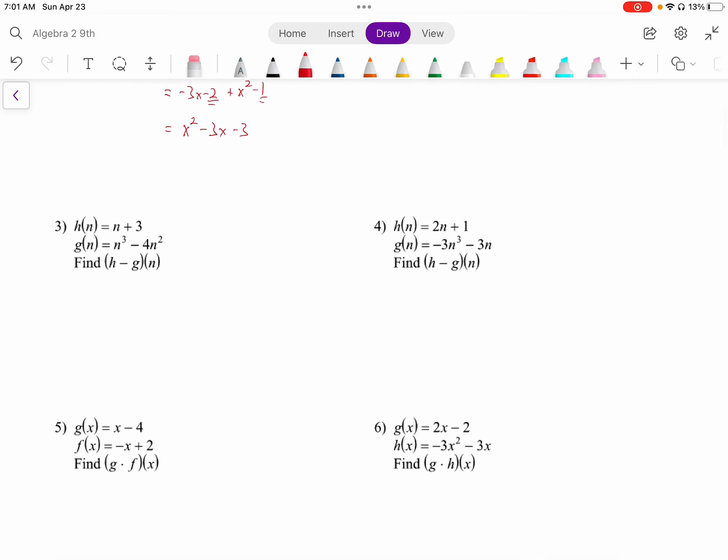Subtraction is next, number 3. We have h minus g of n, which is the same as h of n minus g of n. We want to be careful with this negative. We need to put parentheses around g of n. You can put parentheses around both to show the two functions, but you definitely have to put it around the g of n because you're subtracting, and that subtraction will get distributed. So we'll distribute the negative. We have n plus 3 minus n cubed plus 4n squared. That's the most common error when people forget to distribute the negative here. There's actually no like terms here, so we'll just put this in descending order: negative n cubed plus 4n squared plus n plus 3.